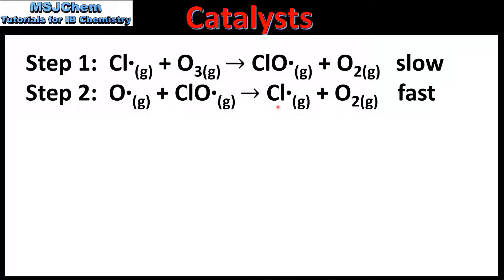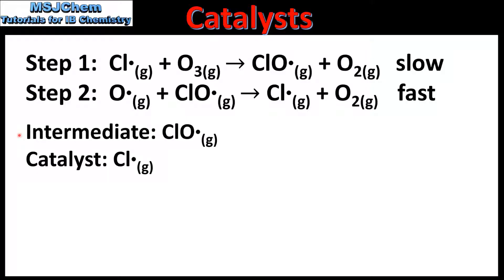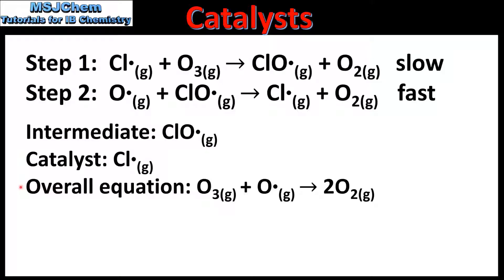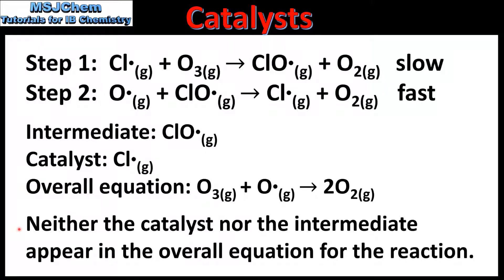From this we can deduce that the chlorine radical is acting as the catalyst in the reaction, because it appears in the reactant side of the rate determining step and is regenerated in the product side of the next step. In this mechanism the intermediate is the chlorine monoxide radical, and the catalyst is the chlorine radical. Note that neither the catalyst nor the intermediate appear in the overall equation for the reaction — when we cross out the catalyst and intermediate from the reaction mechanism we are left with the overall equation.